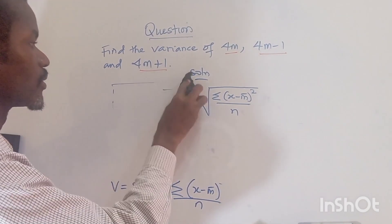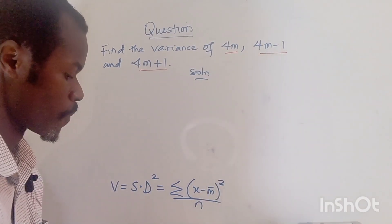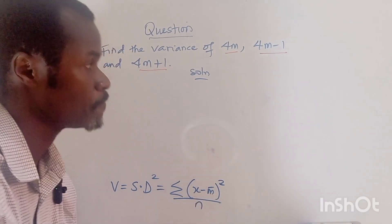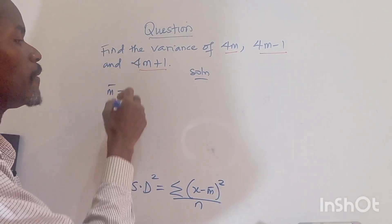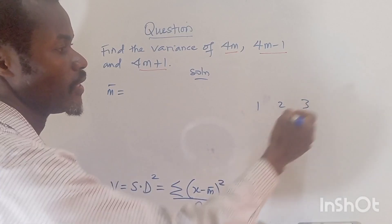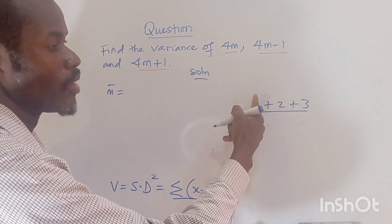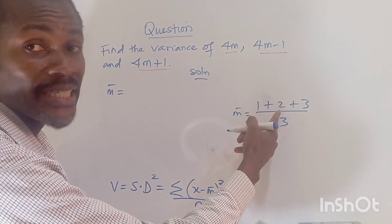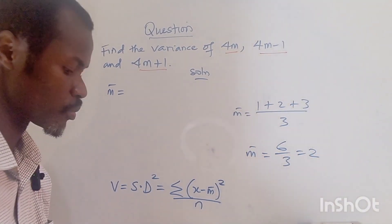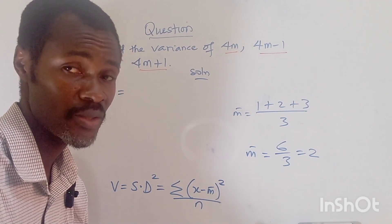Now that we know our formula, we can use it to solve the problem. The first thing we want to find is the mean. We always start from the mean. For example, for numbers 1, 2, and 3, the mean is found by adding them up and dividing by how many there are: 1 plus 2 plus 3 equals 6, divided by 3, which gives a mean of 2.